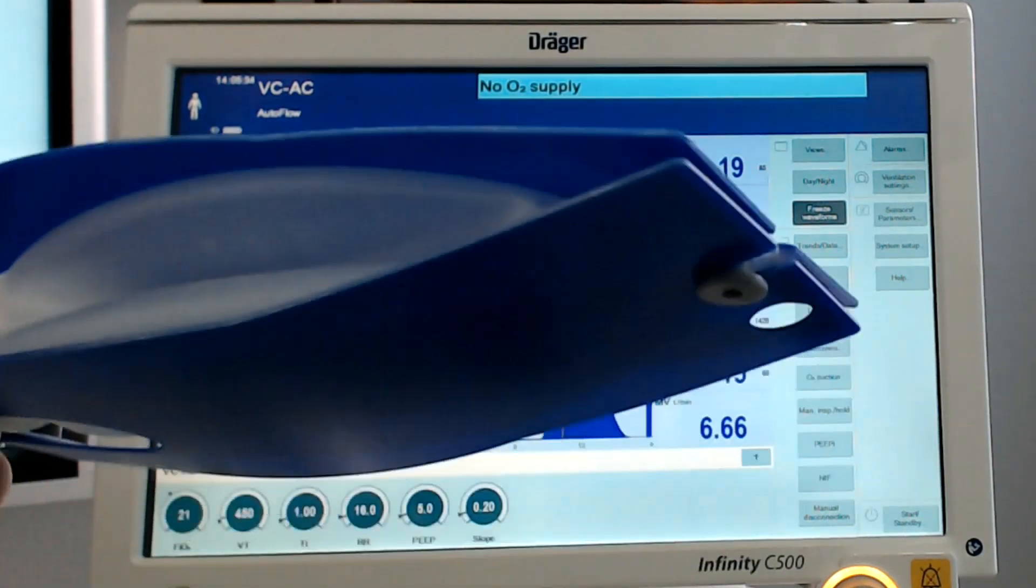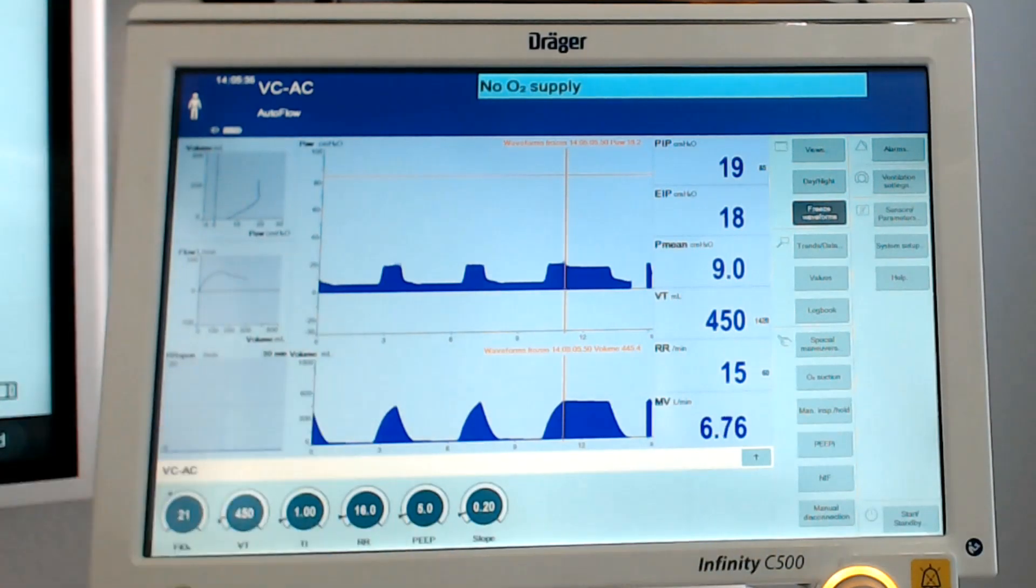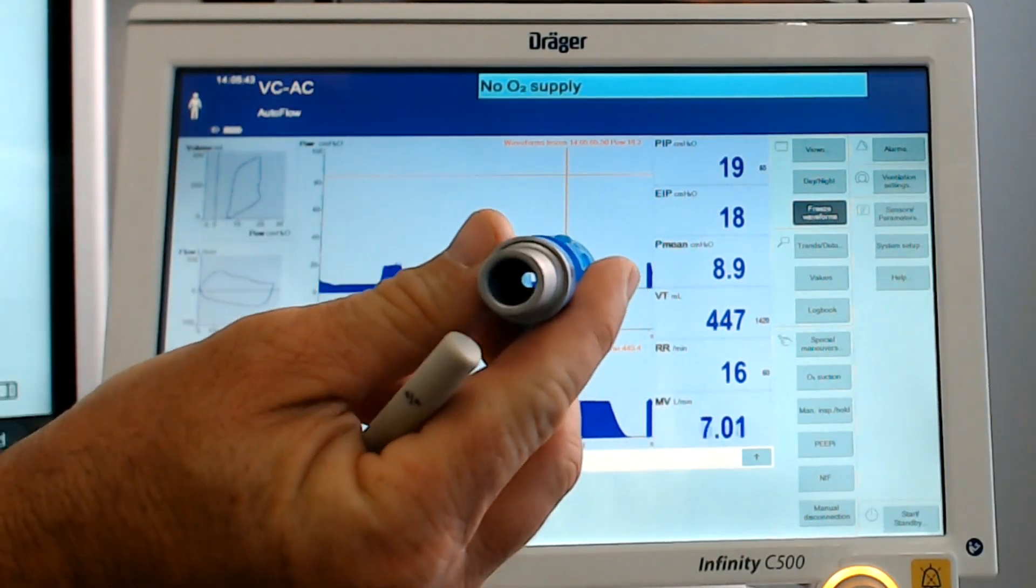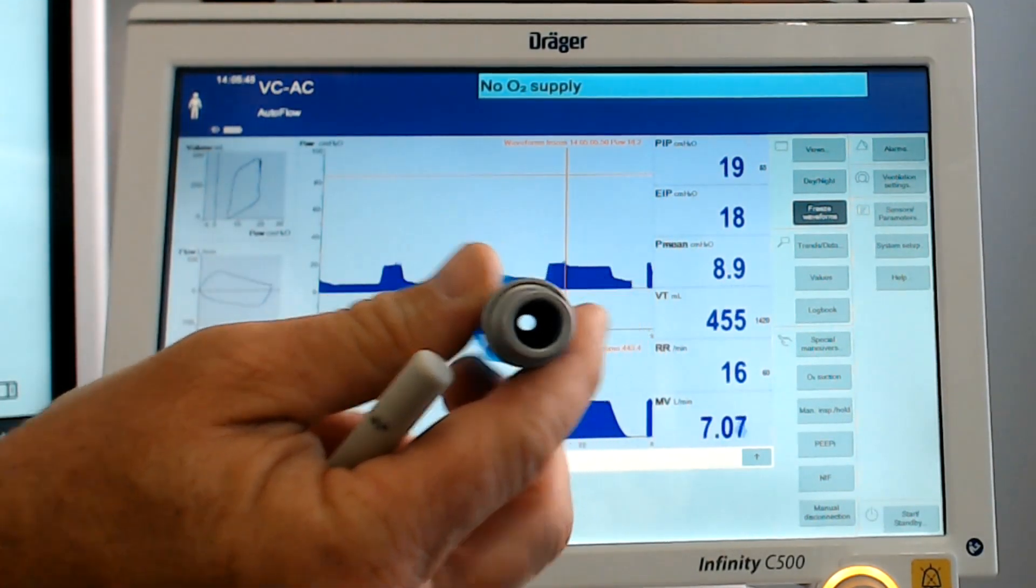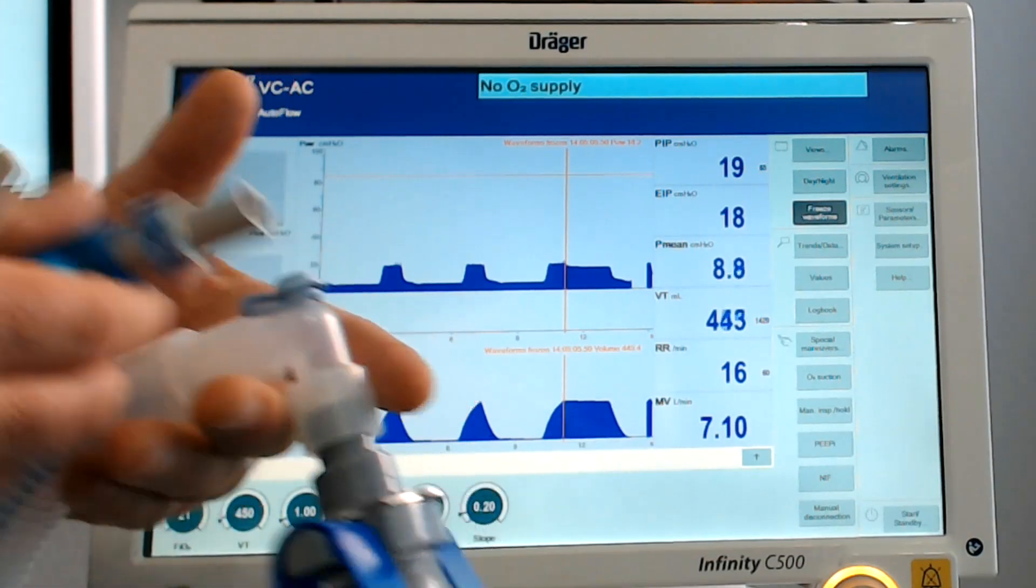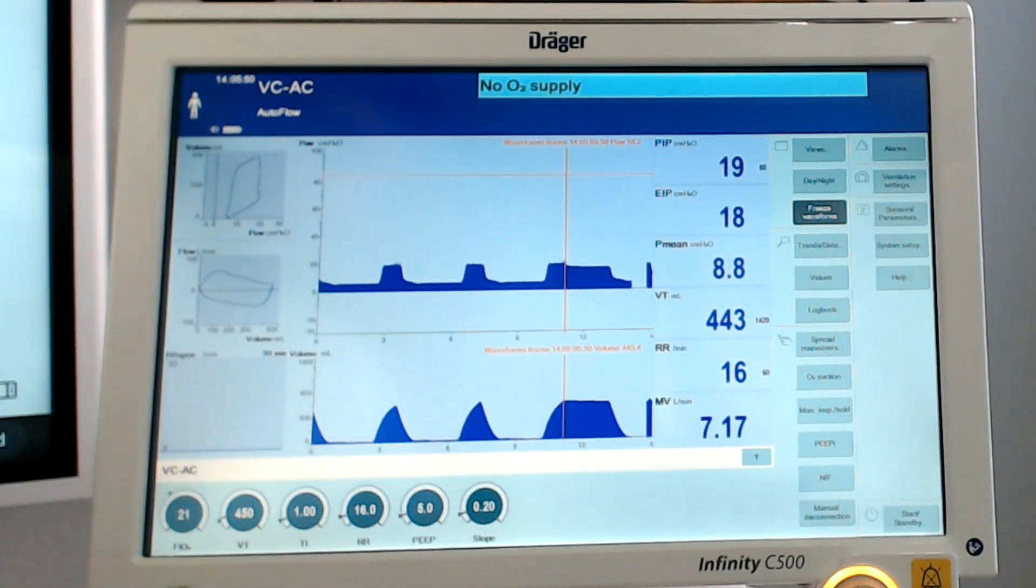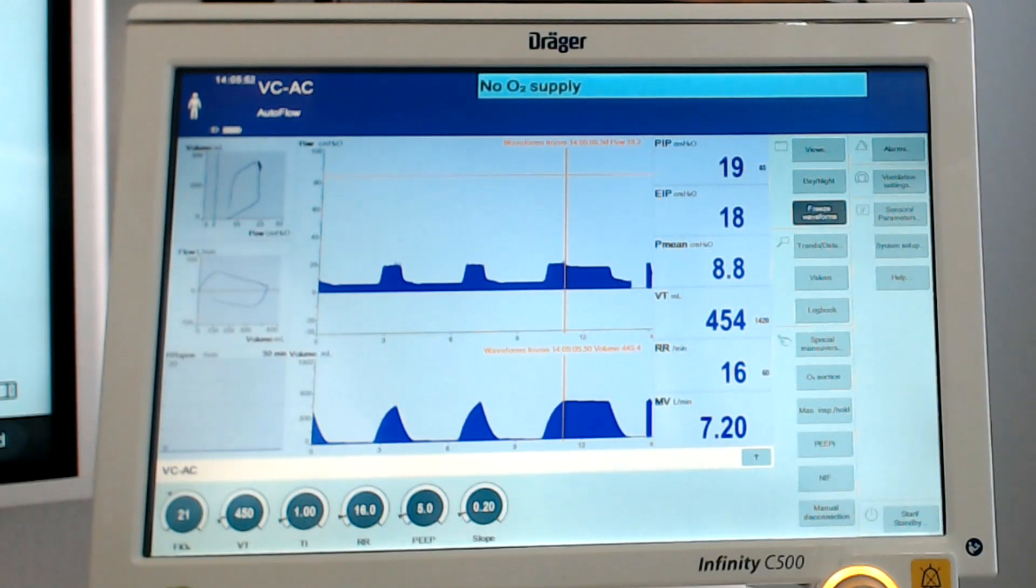So that was baseline compared to decreased compliance compared to increased compliance. Now, remember, just like in previous videos, I'm going to take this simulator with that little bitty hole in it and we're going to put this in line into the test lung and see what effects airway resistance has in PRVC.